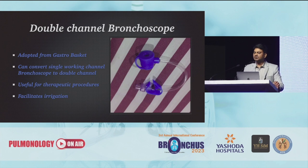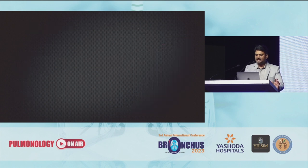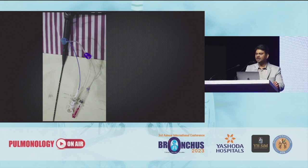Can you imagine a double-channel bronchoscope in the near future? It may not be possible for a few more years. But by simply adding this irrigator cap, which is actually adopted from the gastro-basket, you have the advantage of converting your bronchoscope into a double-lumen scope. You can pass your biopsy forceps into the working channel, and with the other port of this irrigation cap, you can use it for irrigation purposes — to clear your working channel and clear blood clots or debris using this irrigation cap.